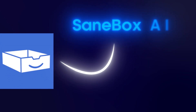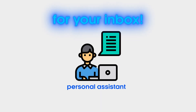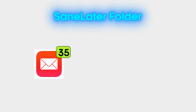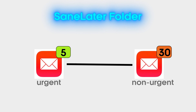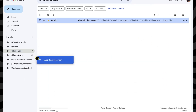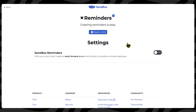The third tool is SaneBox AI — an email management tool that is basically like having your own personal assistant for your inbox. It uses smart AI to determine what is important now and what can wait, so you stop wasting time looking for what matters. The SaneLeader folder is one of its main features — SaneBox will automatically move non-urgent emails there to keep your main inbox decluttered and distraction-free. My favorite feature is the SaneBlackhole: drag one of someone's emails into the black hole just once, and SaneBox ensures they vanish.